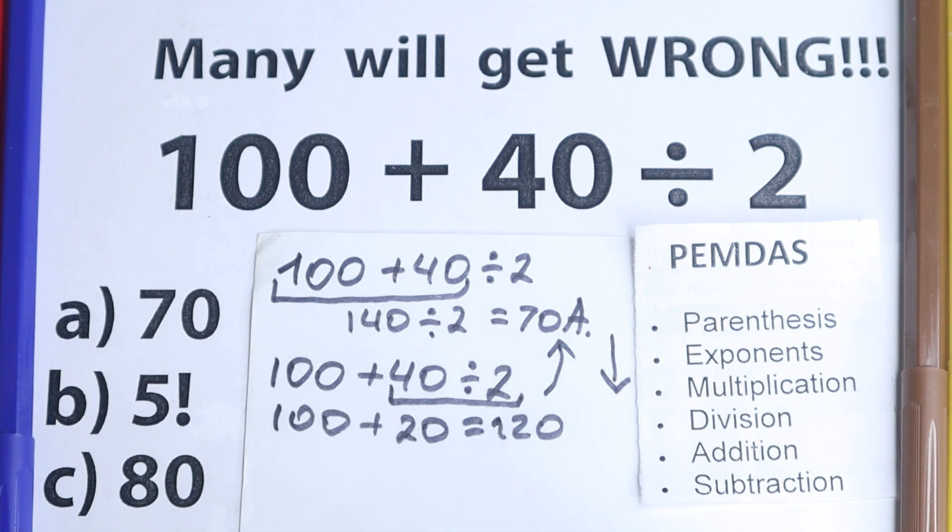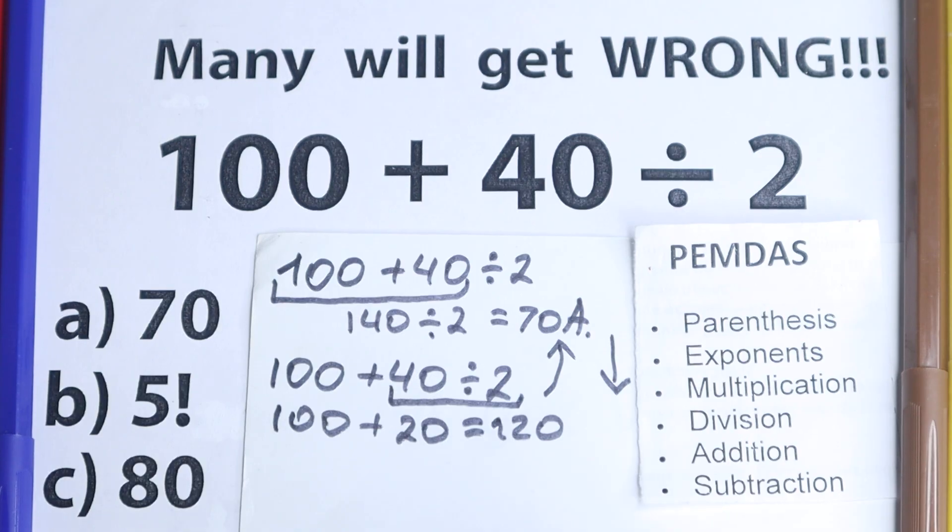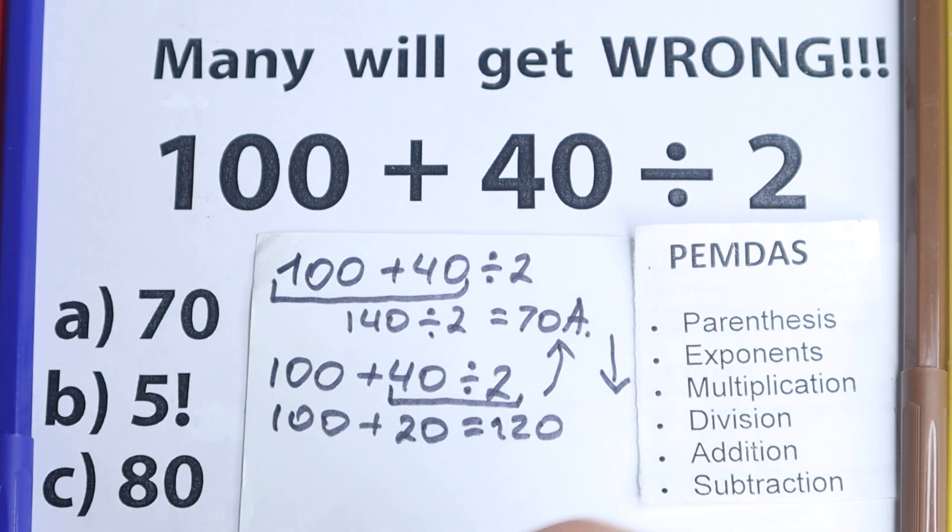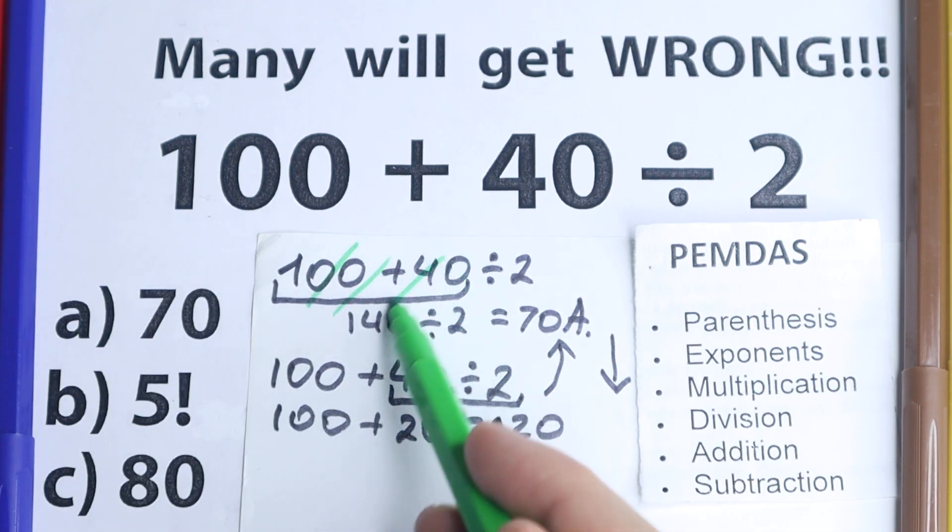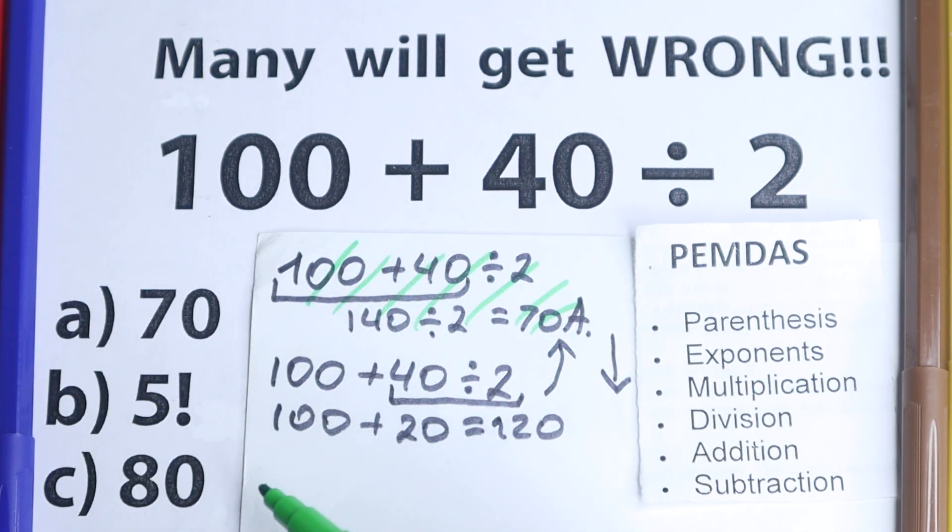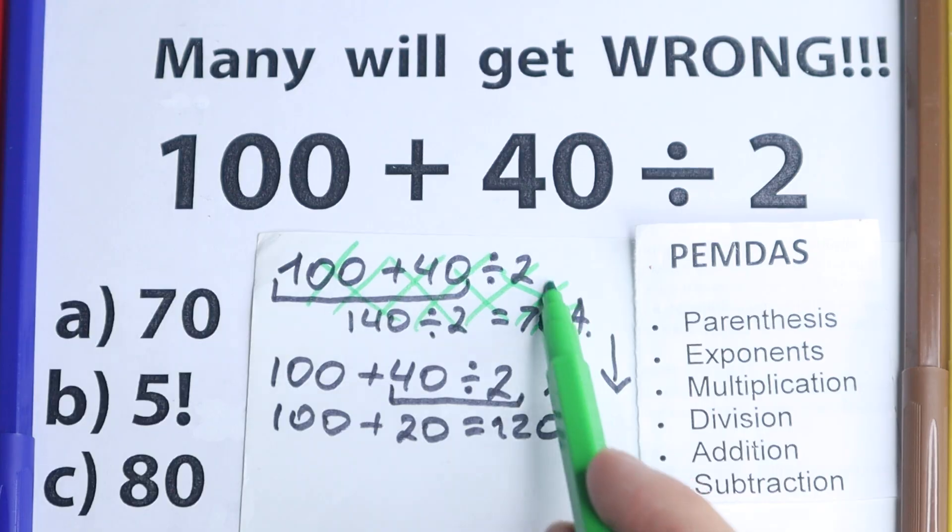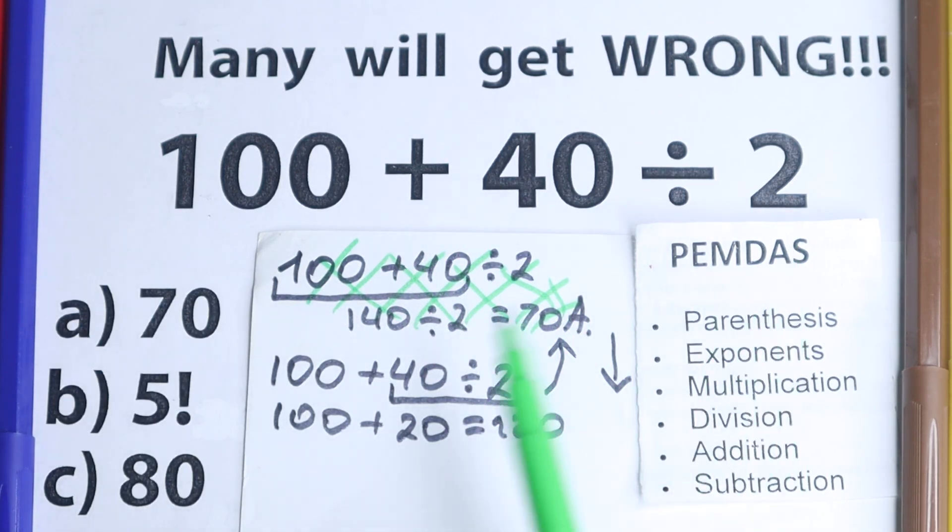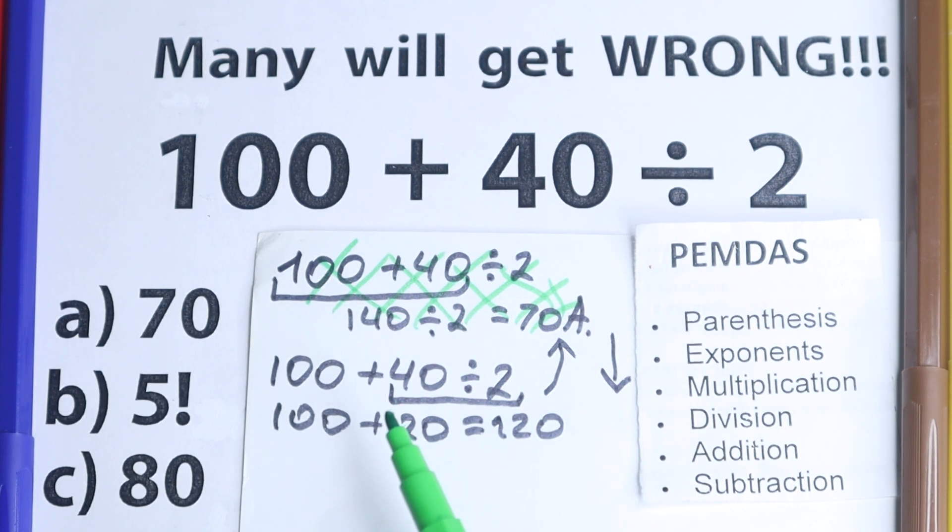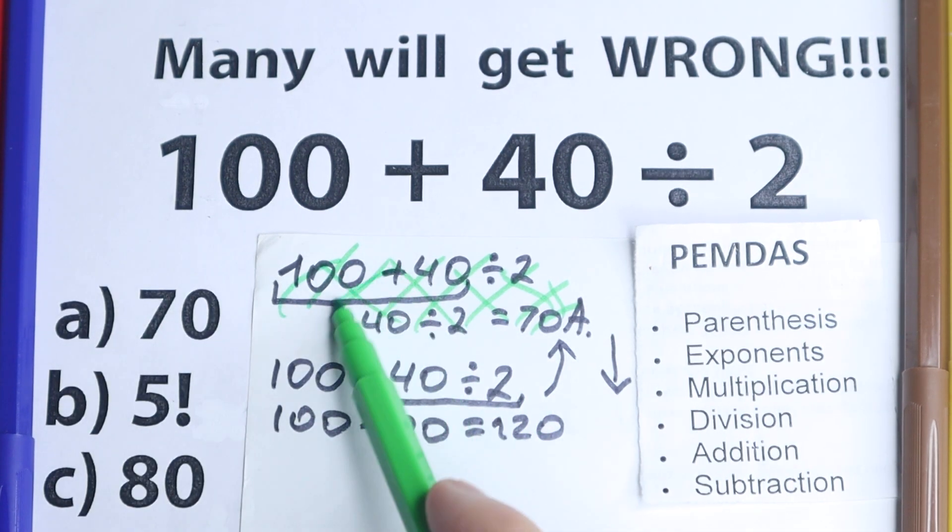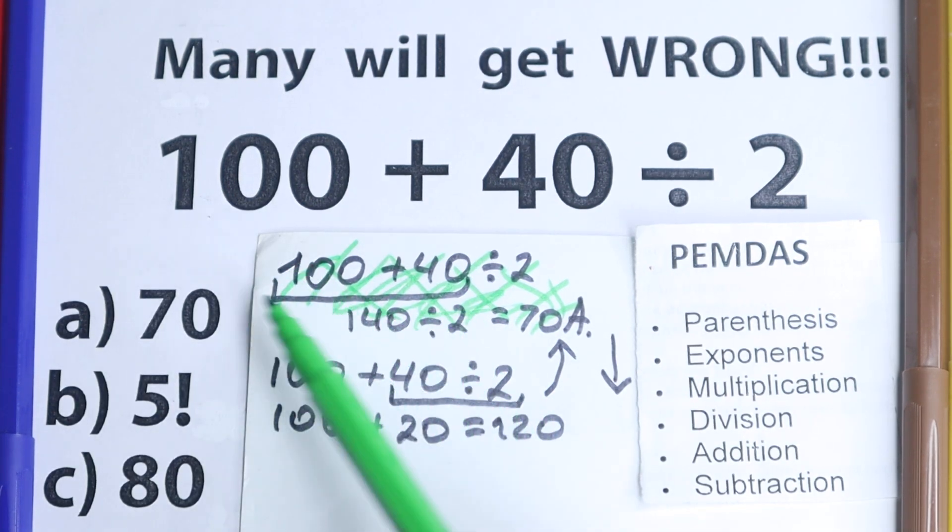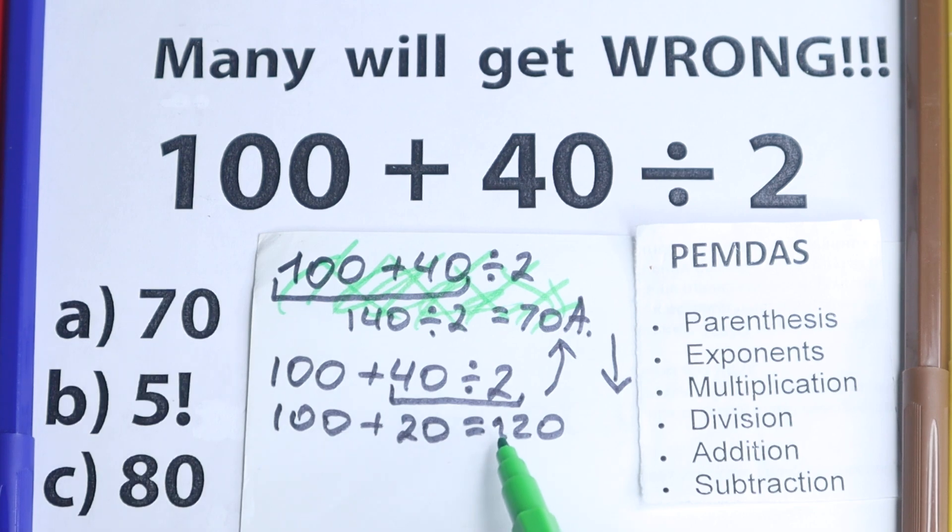And they say option A is the correct answer to this problem. And then I answer them, but option A is absolutely incorrect. Incorrect solution because we cannot go with addition first. We need to work according to PEMDAS or BODMAS, whatever order of operations you select, you need to work according to this order of operations. But if you're talking about the correct answer, the correct answer is 120.